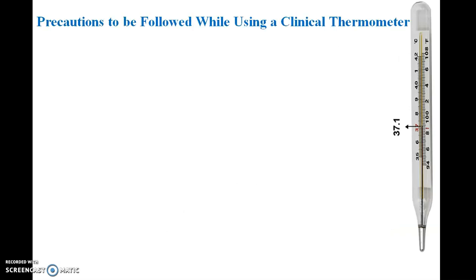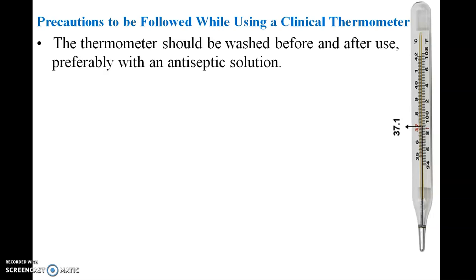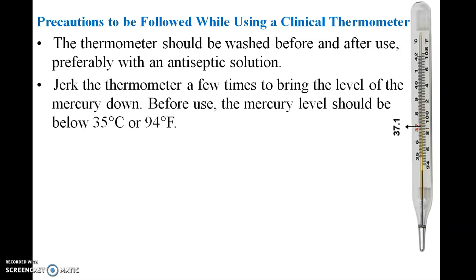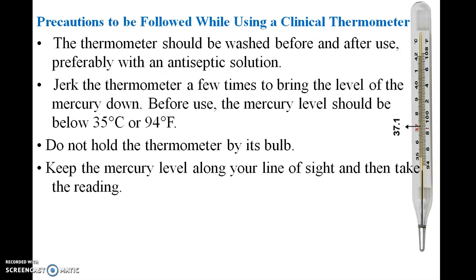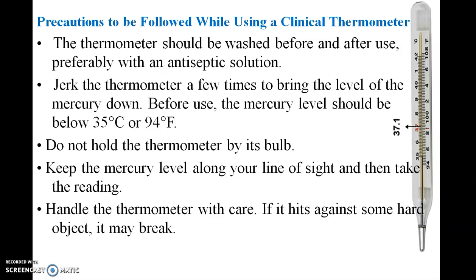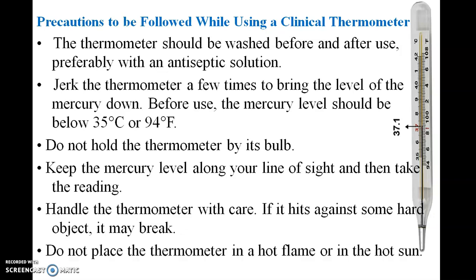Precautions to be followed while using a clinical thermometer: wash the thermometer before and after use with antiseptic solution. Shake the thermometer a few times to bring the level of mercury down before use. The mercury level should be below 35°C or 95°F before use. Do not hold the thermometer by its bulb. Keep the mercury level along your line of sight when taking the reading. Handle the thermometer carefully — if it hits a hard object it will break. Do not place the thermometer near a hot flame or in hot sun.